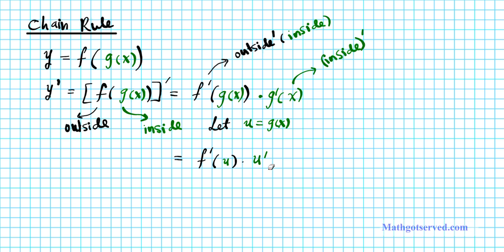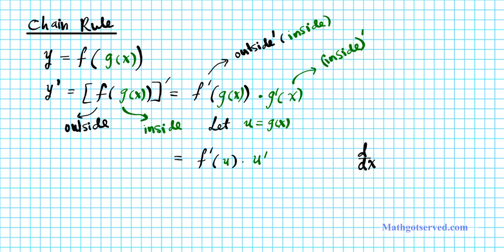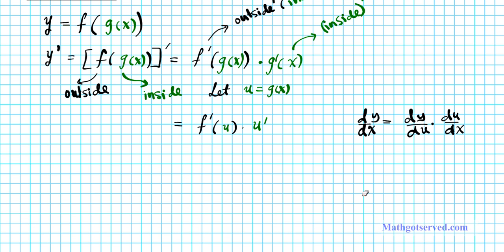This is equivalent to the Leibniz notation. If you have d/dx of a composite function f of u, the same thing can be written as dy/du times du/dx. Here dy/du is the derivative of the outside function evaluated at the inner function, and du/dx is the derivative of the inner function. These two formulas are exactly the same thing. With that in mind, let's go ahead and try out two examples.